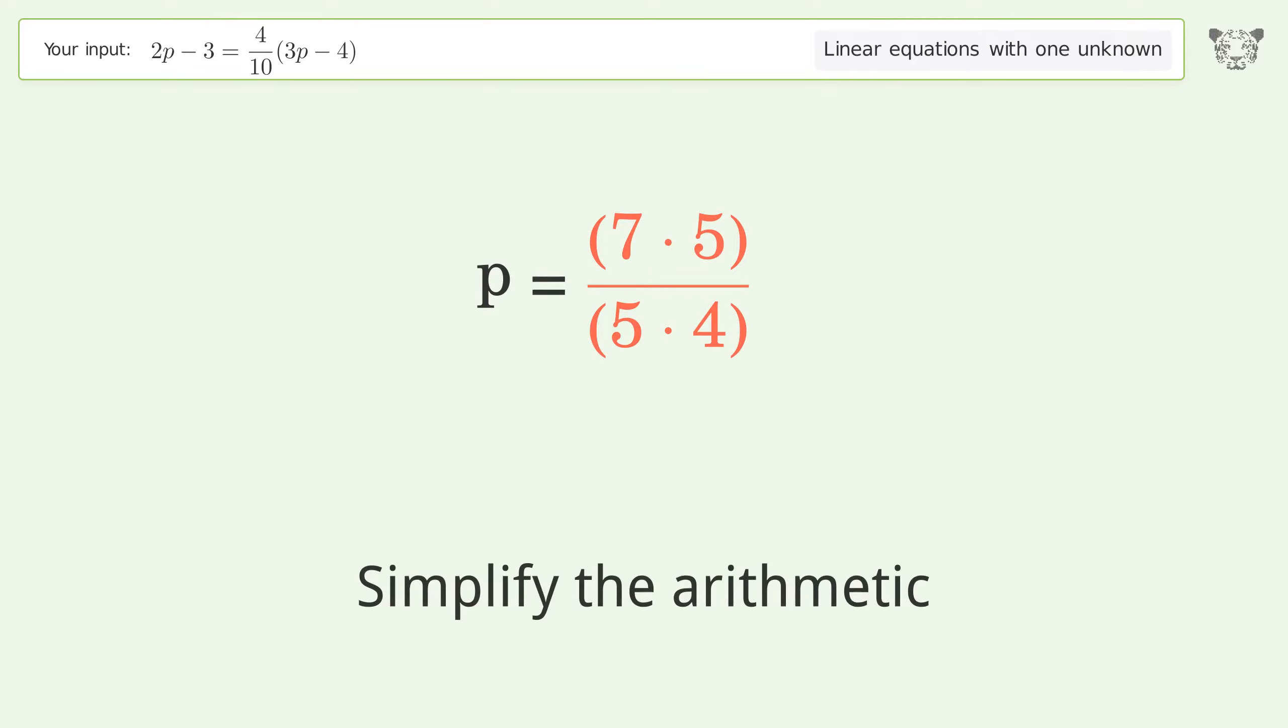Simplify the arithmetic. And so the final result is p equals 7 over 4.